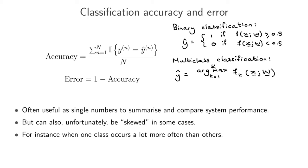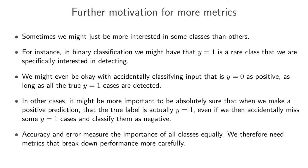Very often we express accuracy as a percentage. The error is just one minus the accuracy, and we can talk about the error rate. Both accuracy and error are easy ways to summarize and compare system performance. But unfortunately it can be skewed, and that very often happens when we have one class that occurs a lot more often than other classes - accuracy then implicitly weights those classes more.